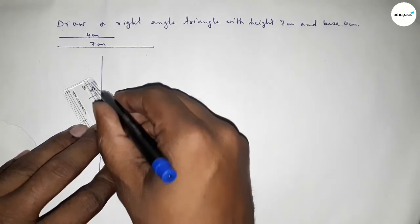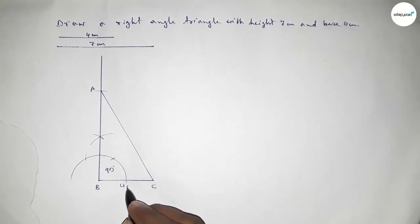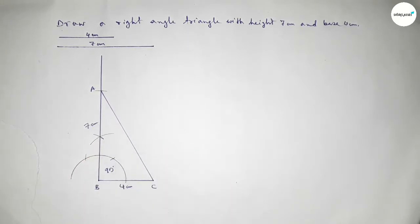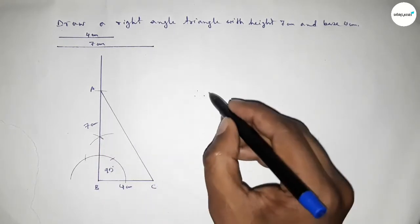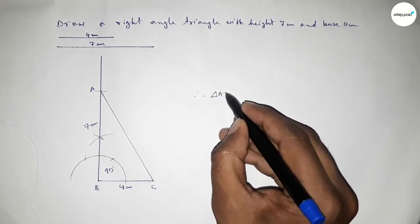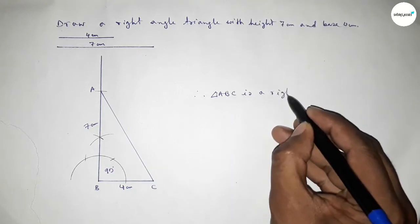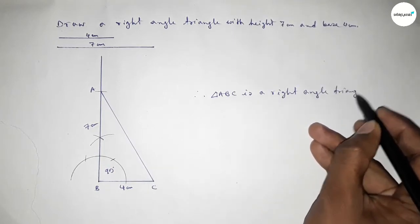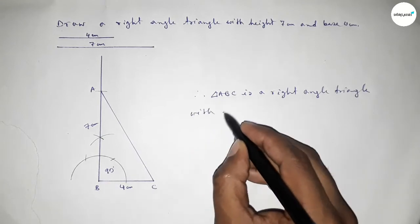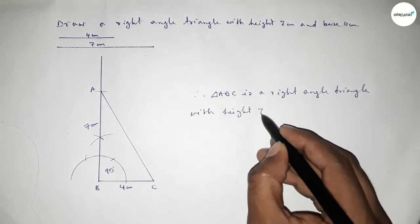Joining A and C to get triangle ABC. This side is 4 centimeters and this side is 7 centimeters. Therefore triangle ABC is a right angle triangle with height equal to 7 centimeters and base equal to 4 centimeters, and angle B equal to 90 degrees.